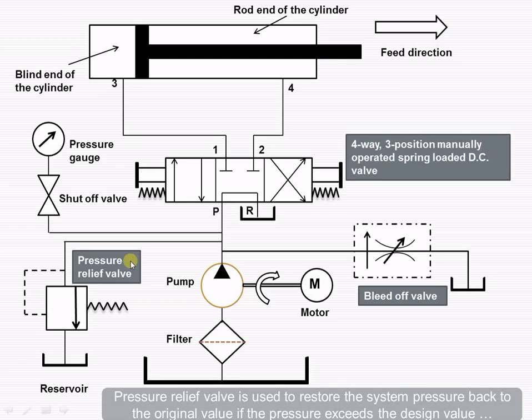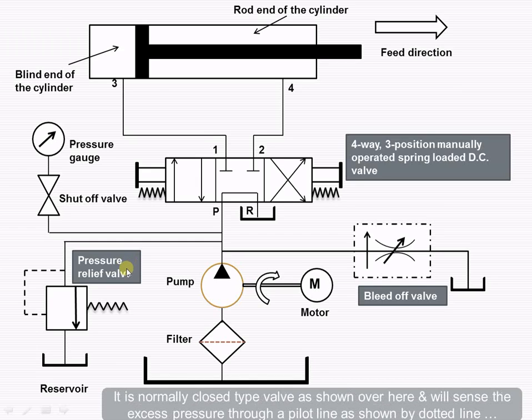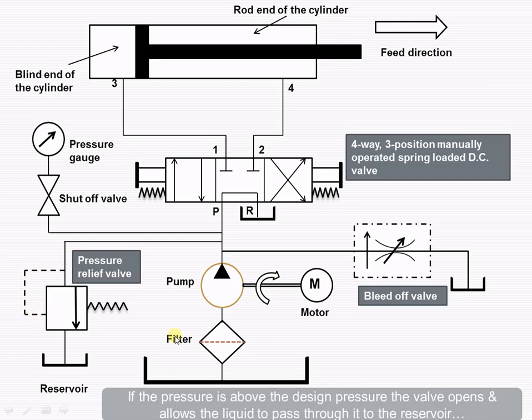The pressure relief valve is used to restore the system pressure back to the original value if the pressure exceeds the design value. You can see that it is a normally closed type of valve as shown over here and will sense the excess pressure through this particular pilot line, which is shown by this dotted line. If the pressure is above the design pressure, then the valve opens and you can see this arrow will coincide over here, allowing the liquid to pass through to the reservoir.